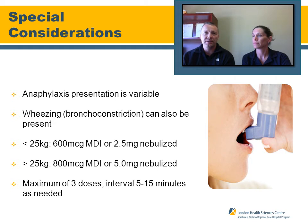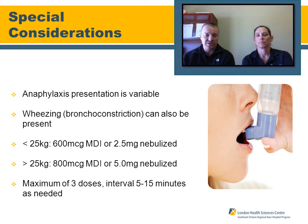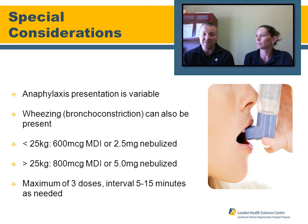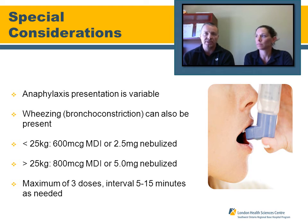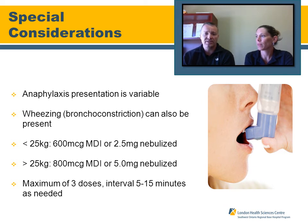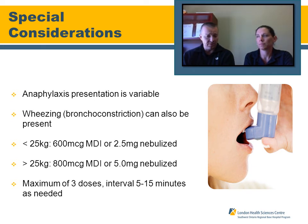Some special considerations: anaphylaxis or allergic reactions are variable in presentation. Anaphylactic patients can also be wheezy, so administer salbutamol (Ventolin) if there are no contraindications such as allergy. Always start with the metered-dose inhaler with a spacer — that is the best delivery method. For patients less than 25 kilograms: 600 micrograms, one puff every four breaths, times six.